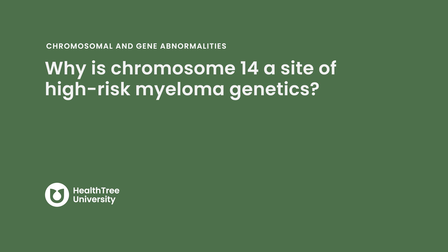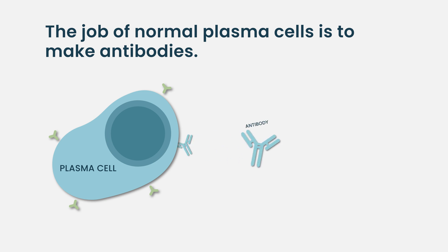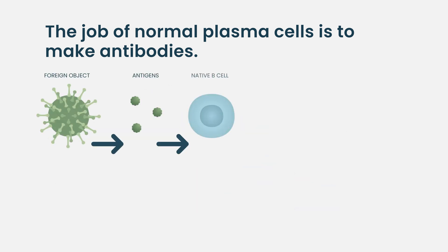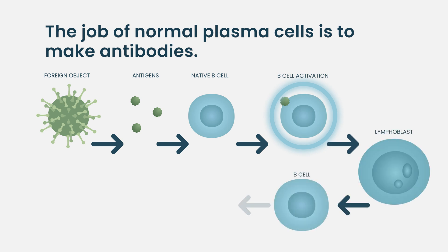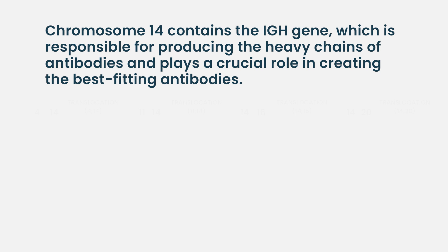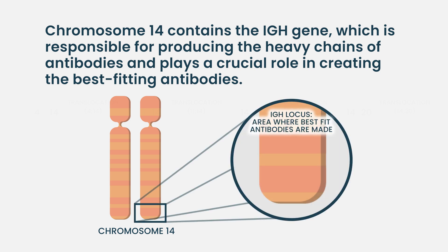Why is chromosome 14 a site of high-risk myeloma genetics? One of the main roles of a normal plasma cell is to make antibodies. When that cell meets a foreign object, it undergoes some changes in its genetic code so that it can recognize and kill off that foreign object. The main place those changes occur in a normal cell is on chromosome 14 — it makes the best-fit antibody there.